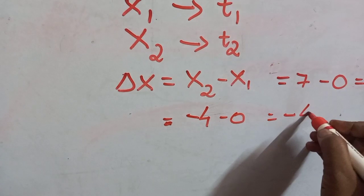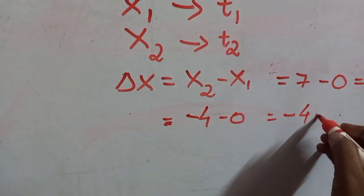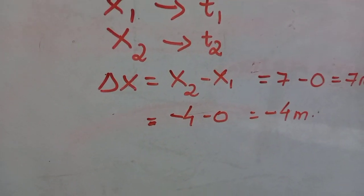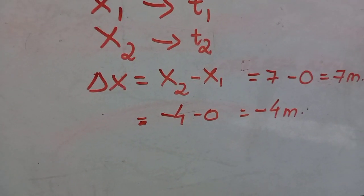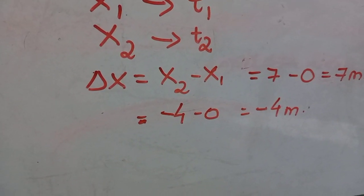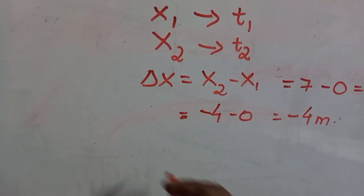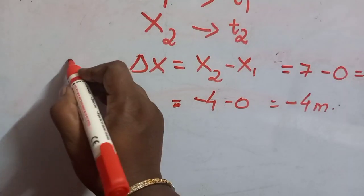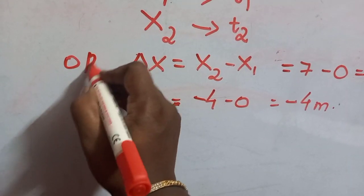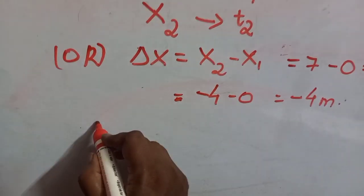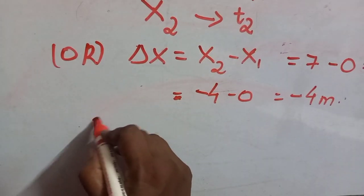Another example: for O to R, displacement = −4 − 0 = −4 meters. And for the displacement along P to Q, we can calculate it as well.